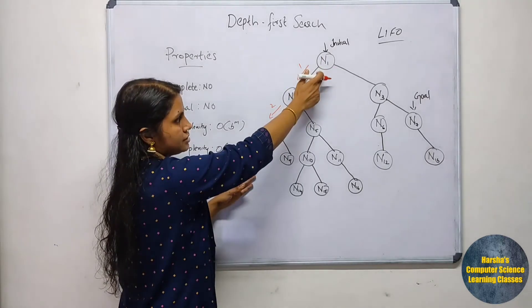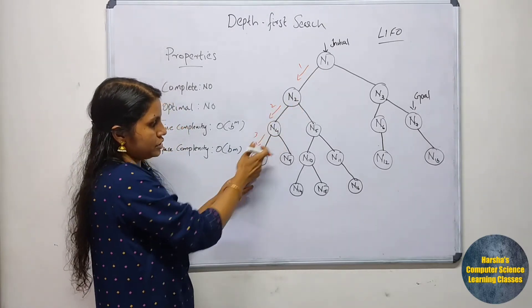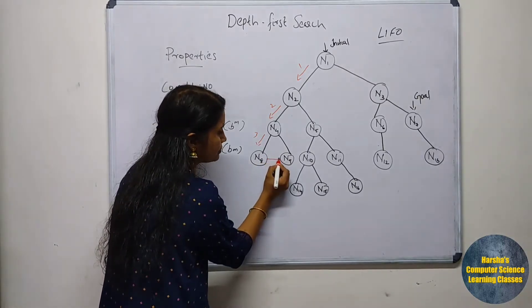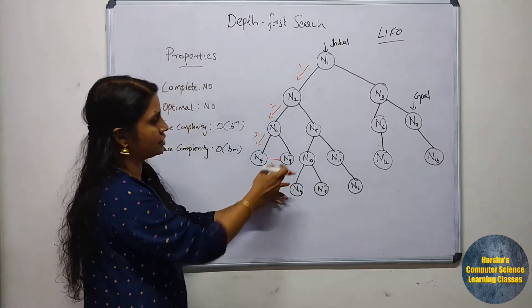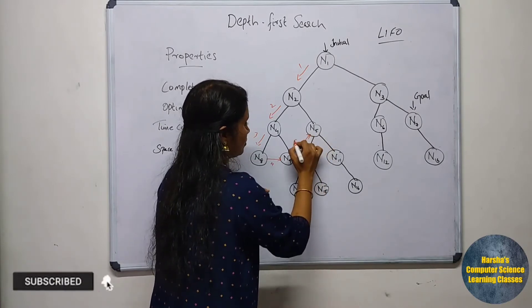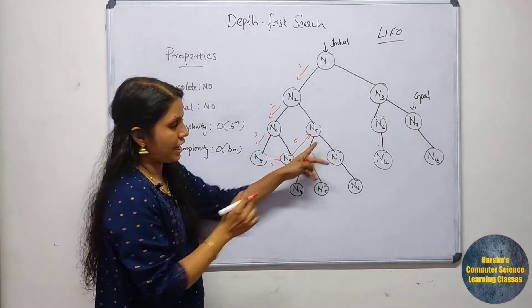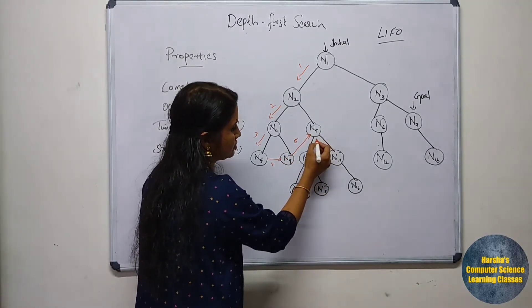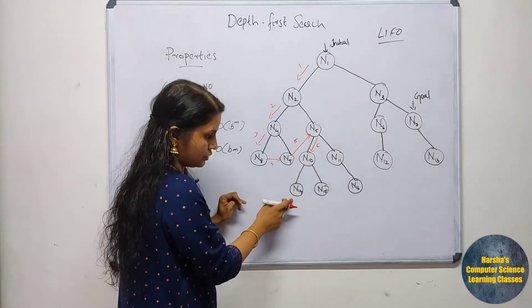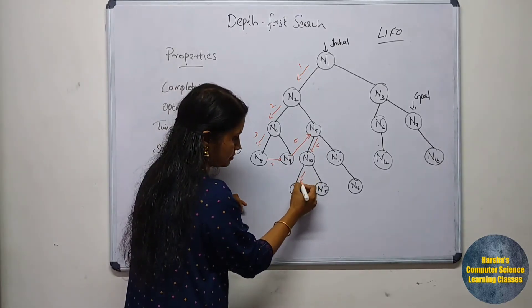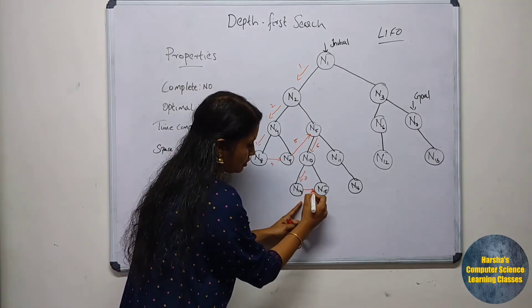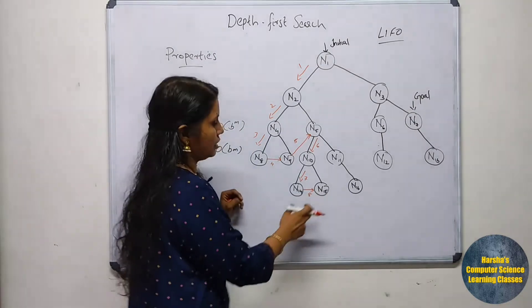We start from N1, then N2, then N4, then N8, then we visit N9, then N5, then N10, then N11.